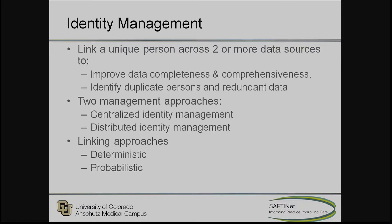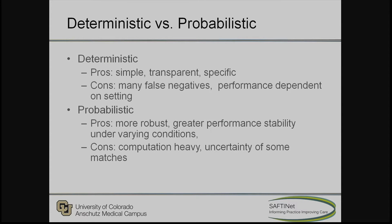That worked fine, but we weren't always going to have that information and needed to push the agenda further. So we looked at other methods of both deterministic and probabilistic linkage. The idea was really to link a person across two or more datasets — both to improve the completeness of your data and to get rid of redundant or duplicate persons. With deterministic linkage, people can be very certain about the linkage: using quasi-identifiers, they either match or they don't.